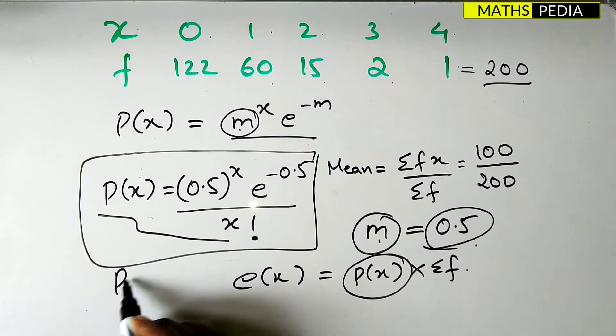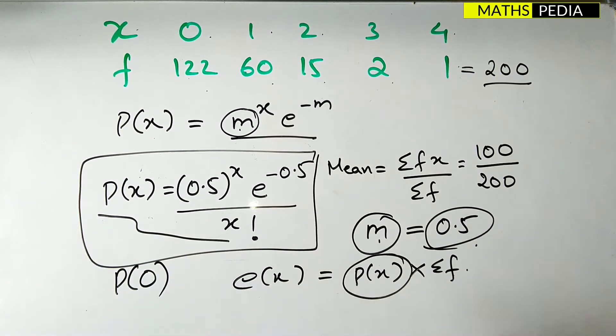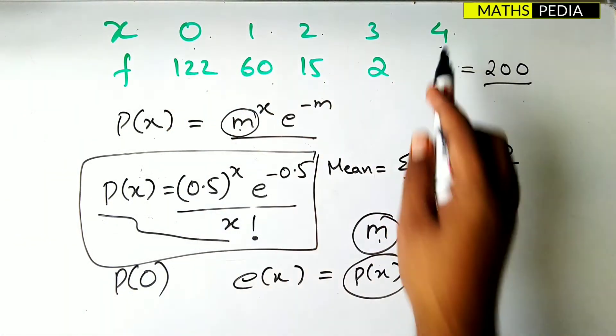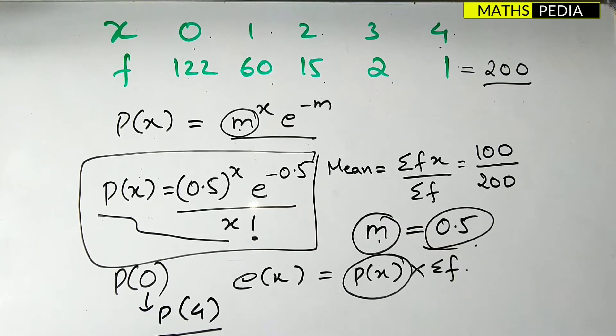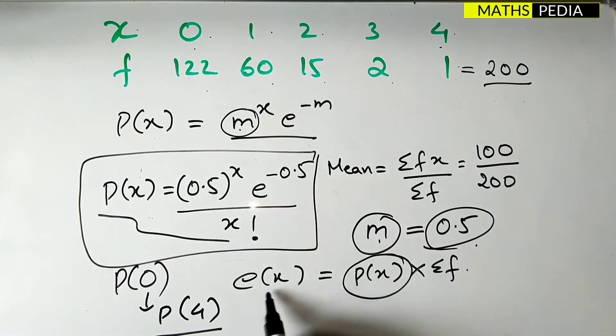So for that we have this formula. And we have to find from p of 0, as you can see, p of 0 to p of 4 you have to find. p of 0 to p of 4 till there you have to find the probability. After that we will find the expected frequency using this formula.